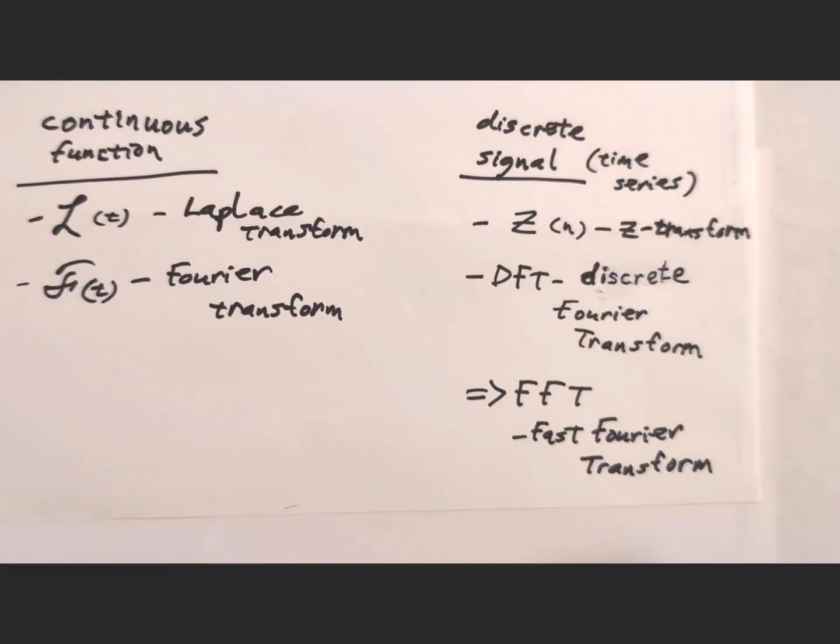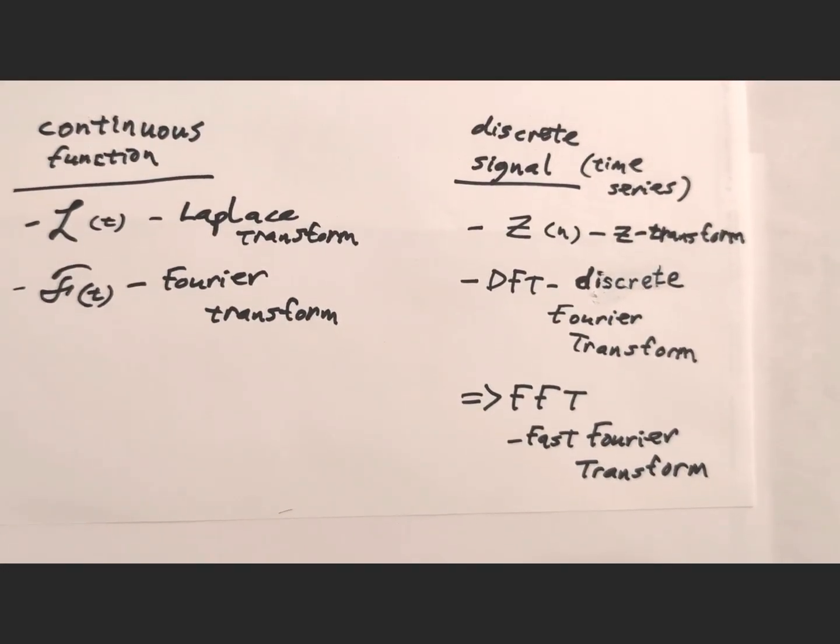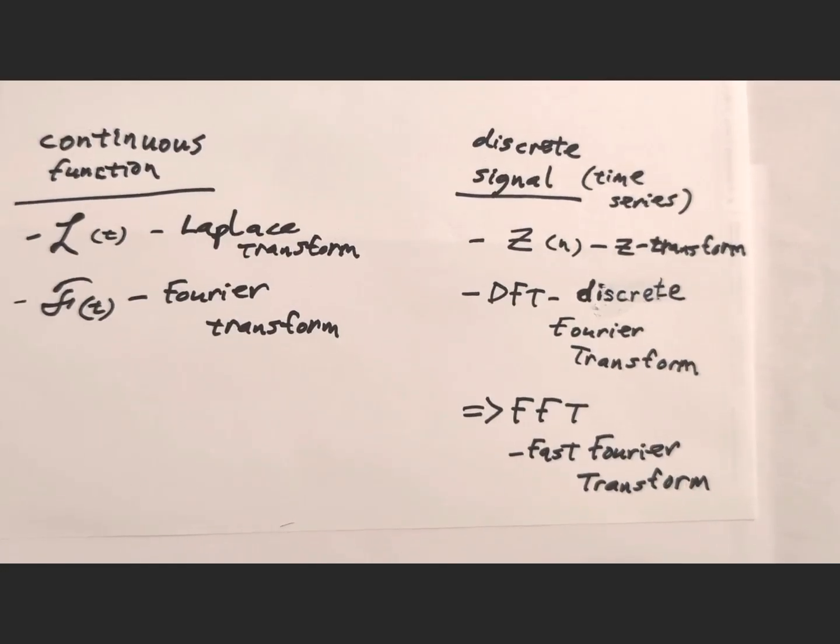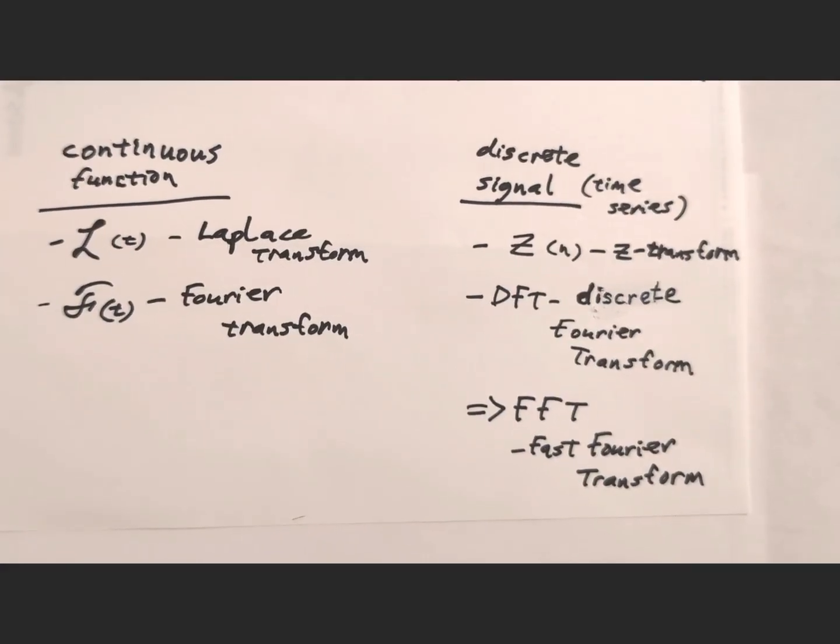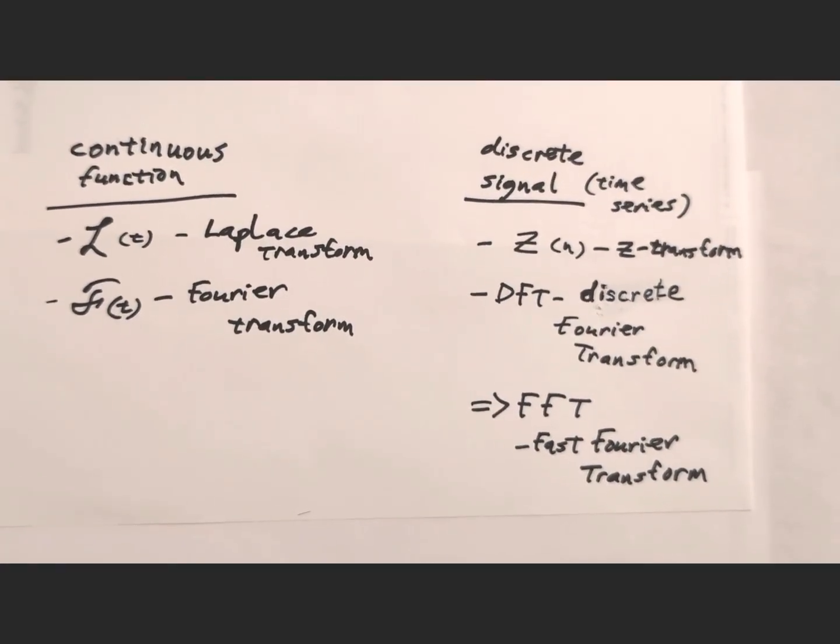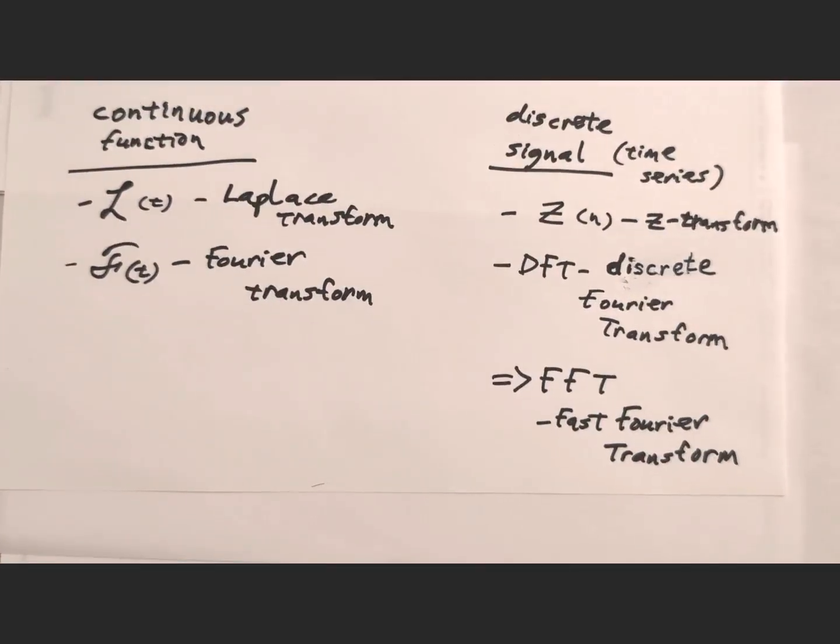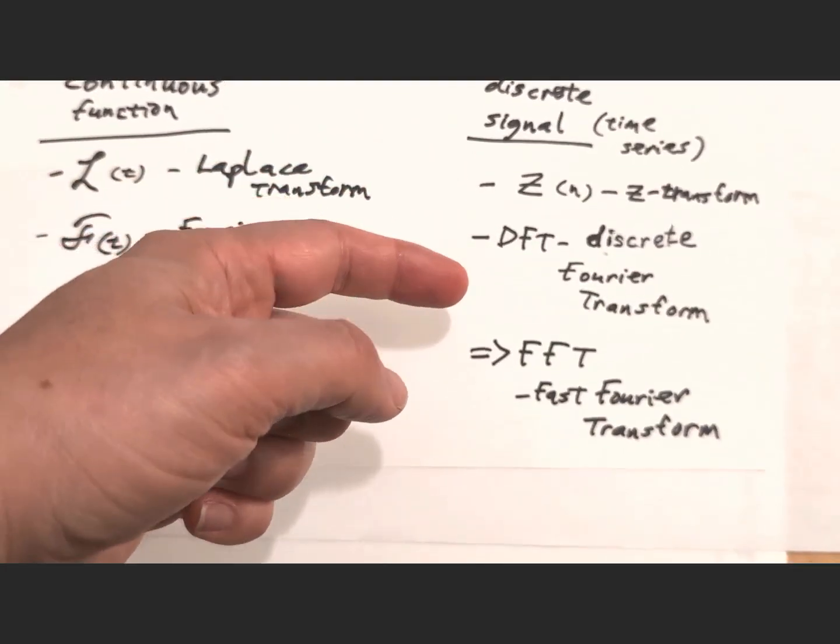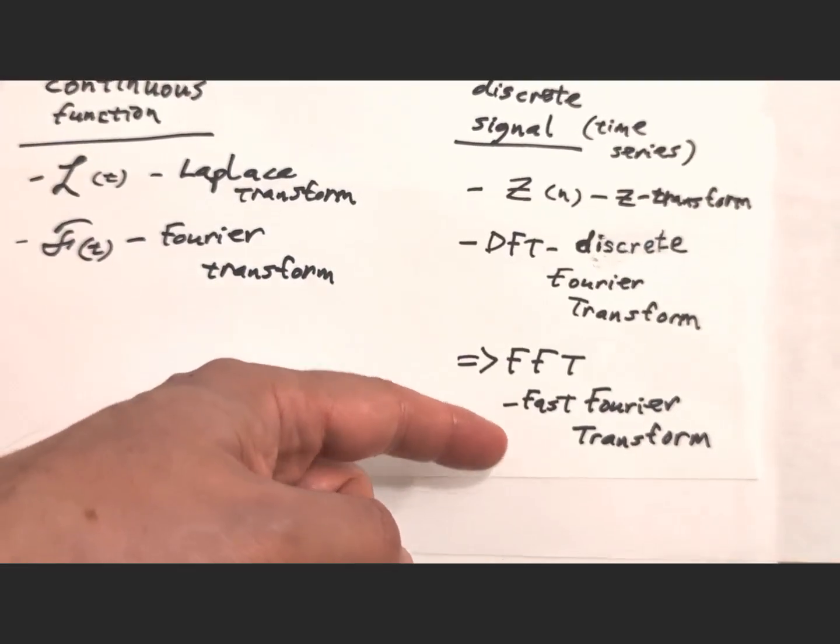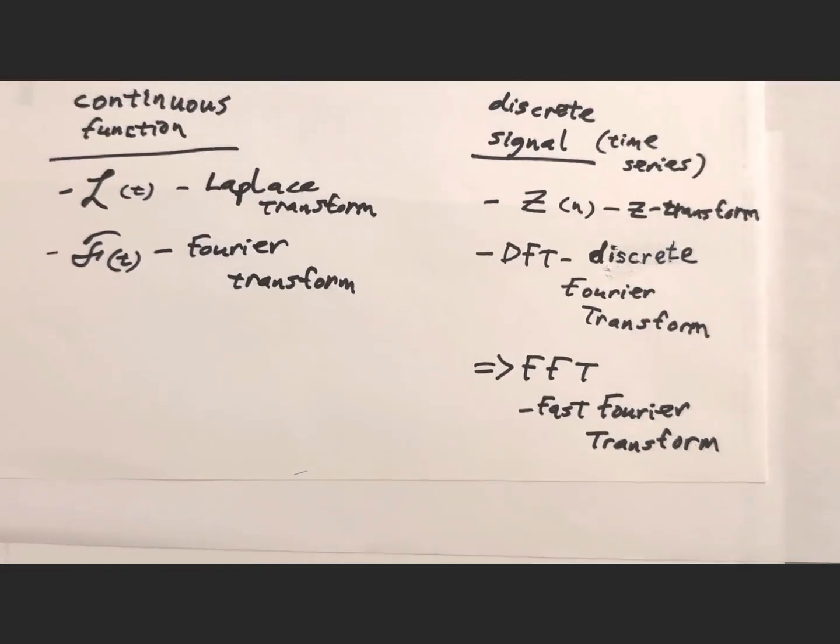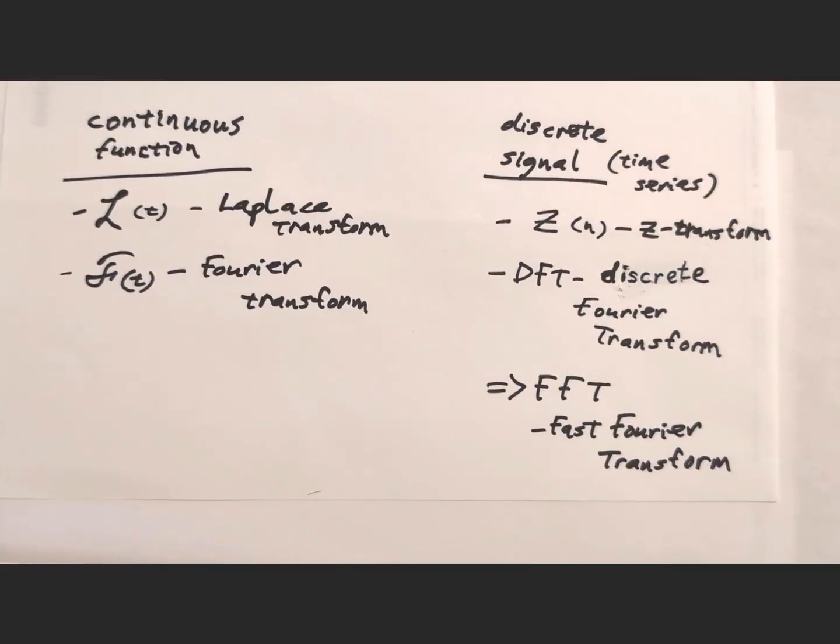In order to convert the continuous time domain signal to the frequency domain, we often use the Fourier transform. Some of you may be familiar with the more general Laplace transform, which is sometimes used in differential equations. But since we're talking about discrete time series, we are going to be using the time series discrete versions of that. Instead of using the more general Z transform, we often use the DFT or discrete Fourier transform. But I'd also like to point out the FFT or fast Fourier transform, which is a very clever algorithm that runs very fast, which is often used to generate the frequency spectrum in near real time.